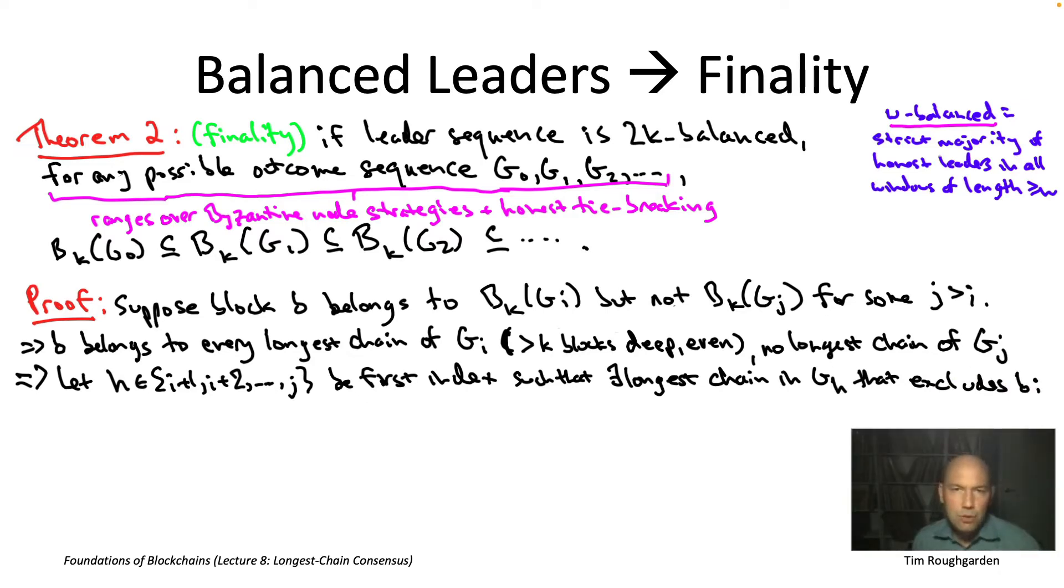So what does this graph, g sub h, look like? Well, the block b is in there somewhere. And we know that already in the entry, g sub i, at that point, little b had been extended k or more times, because it's a member of b sub k of g sub i. So, in addition to this incumbent longest chain, this longest chain that includes the block, little b, because it was already a longest chain in the graph g sub i. At this point in g sub h, by definition of h, there now is a new challenger, a new longest chain that excludes the block b. So, this new longest chain is, of course, equally long to the old incumbent longest chain. And we can imagine tracing it back.